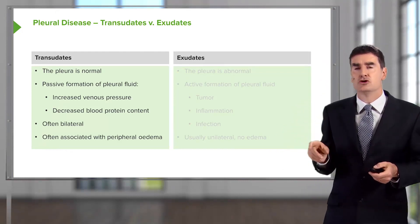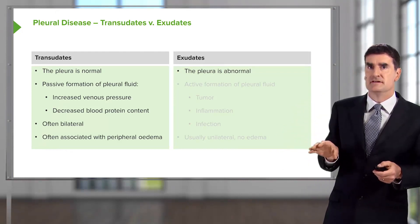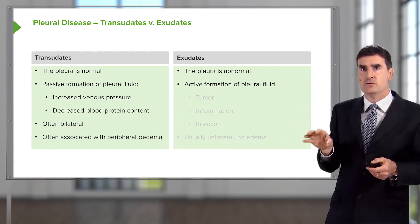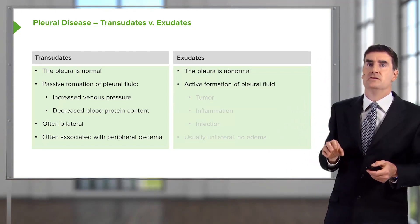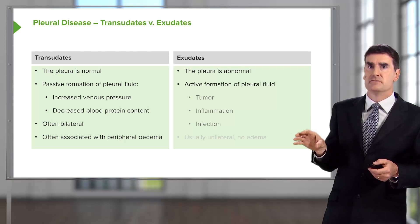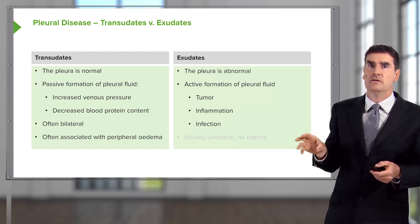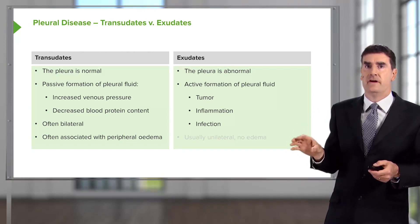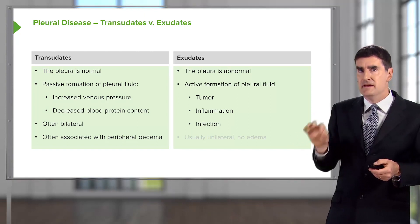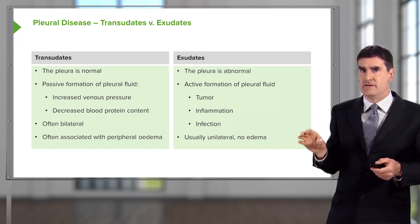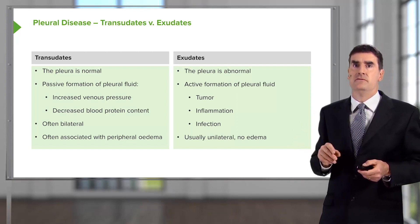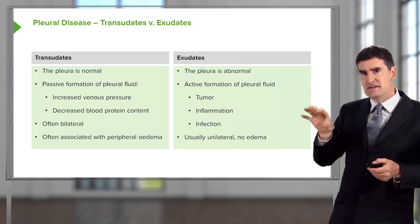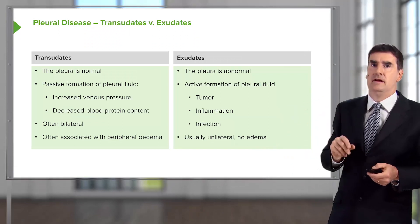Exudates, in contrast, are where the pleura is the abnormality. The problem is that the pleura is abnormal and driving fluid formation, and that occurs with tumor of the pleura, inflammation of the pleura, or infection. These tend to be unilateral and won't have associated peripheral edema because this is a specific pleural abnormality.